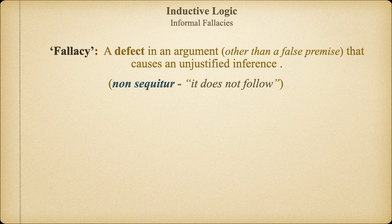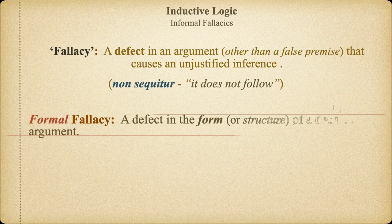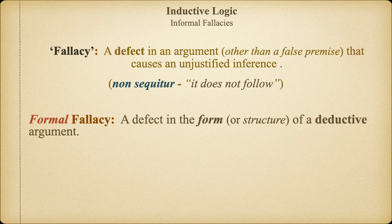In our last video, we gave a general overview of the concept of fallacy. At its heart, a fallacy occurs whenever something goes wrong in an argument which prevents the conclusion from following the premises logically. In the case of a deductive argument, fallacies occur whenever the form or structure of the argument is incorrect. That's why we call them formal fallacies, because they're literally an improperly formed argument. But inductive reasoning doesn't have the strict set of rules that we find in formal deductive systems like term logic or predicate logic.